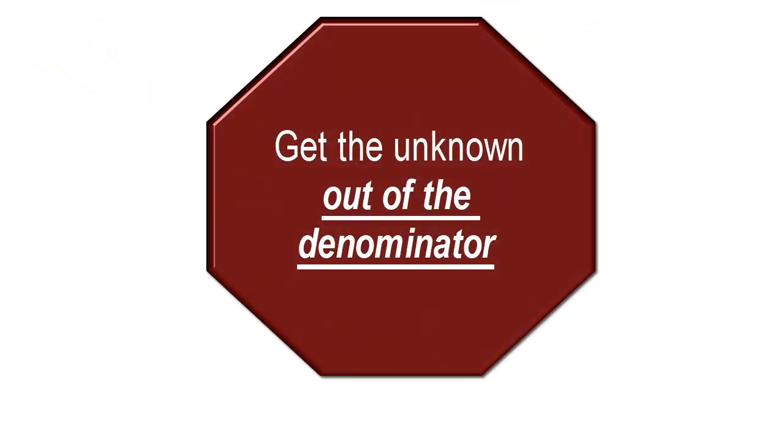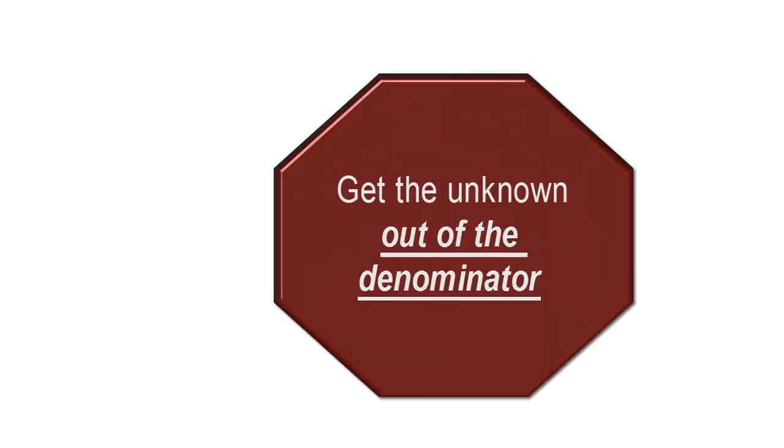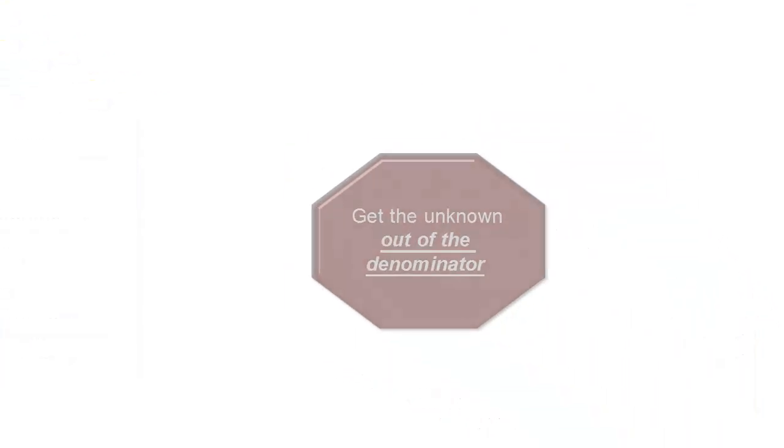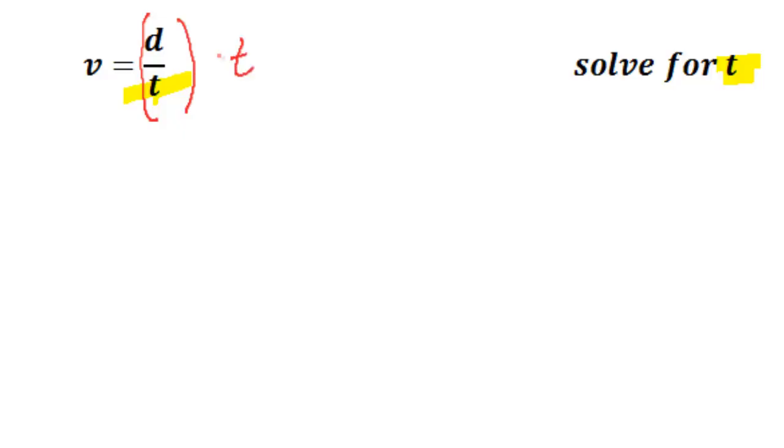The correct way to handle this is to get the unknown out of the denominator. The way you do that is you multiply both sides by T. So you're multiplying by the entire denominator. Once you get in that format, most people have no trouble solving it.